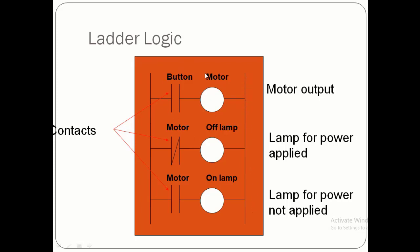Ladder logic is constructed with a positive power rail and a negative power rail. In between, we have an input button and an output. Power flows from the rail through the button — when the button is turned on, power flows to the motor. A normally closed contact keeps a lamp on by default; when the switch is turned on, the lamp becomes off — it works inversely to the button.